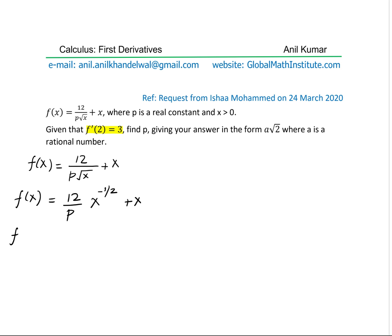We can find the derivative of this function. 12 over p being constant times the derivative will be minus half x to the power of minus half minus 1, which is minus 3 by 2, plus x. We can simplify this. The derivative is negative 6 over p times 1 over square root of x cubed plus x.